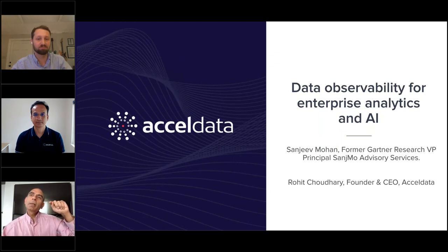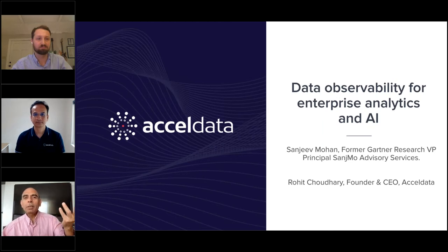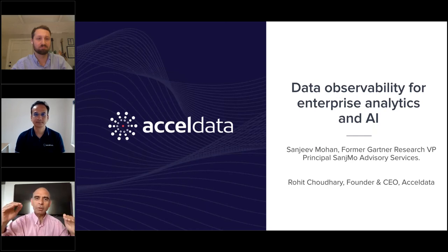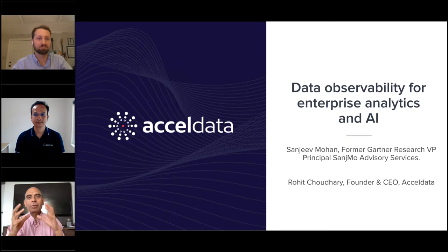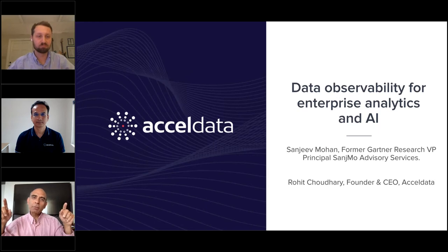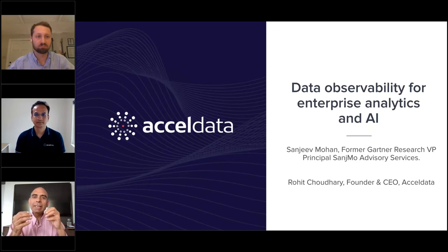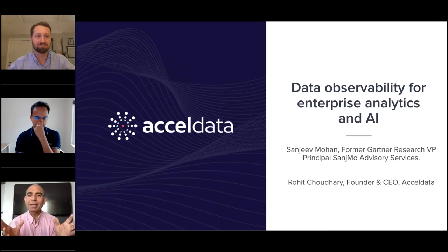This is where it becomes multi-dimensional data observability. It is not simply asking whether the data arrived on time. Freshness of data is one thing, but trying to understand where in that complex pipeline the outage happened is a far more complex problem, which needs an understanding of lineage, how that data has transformed, and who is using that data.